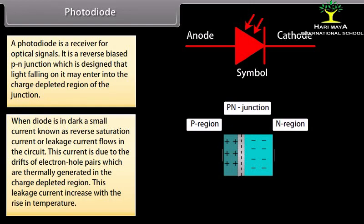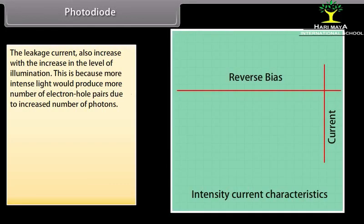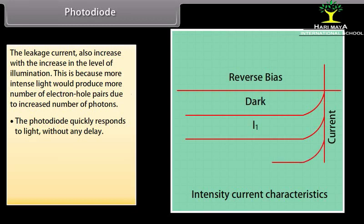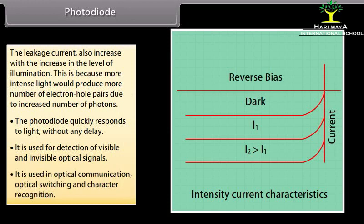This leakage current is due to the drift of electron-hole pairs which are thermally generated in the charge depleted region, and increases with rise in temperature. The leakage current also increases with increased illumination, as more intense light produces more electron-hole pairs. The photodiode quickly responds to light and is used for detection of optical signals, optical communication, optical switching, and character recognition.